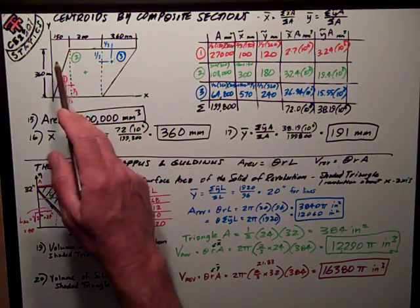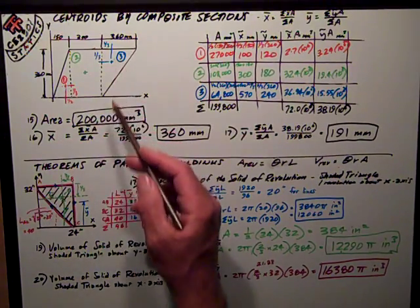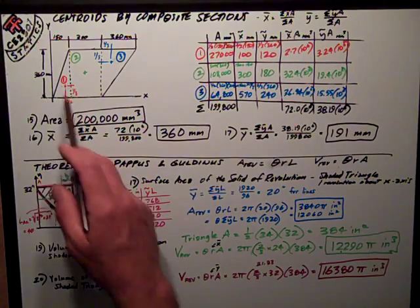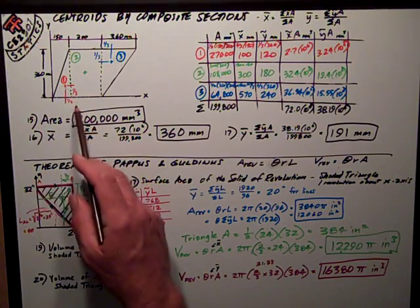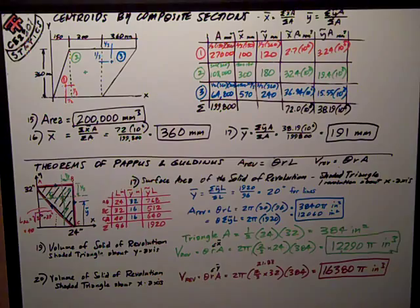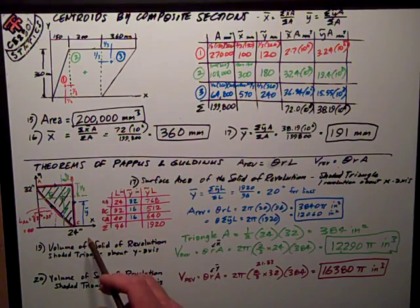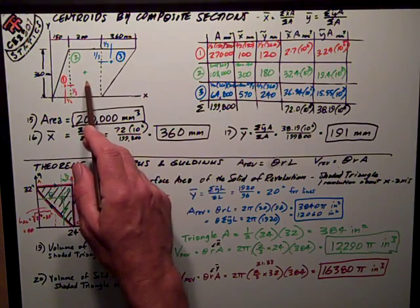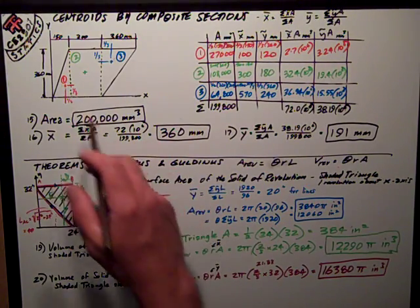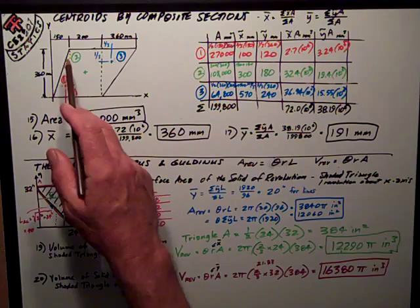I need the centroidal distances of the parts and pieces and the areas of those. So my shape looks like this: 150, 300, 360 on the x, and the whole thing is 360 millimeters high. And I need to break it up into three parts. This is one easy way; there are several ways to do this depending on how you break it up.